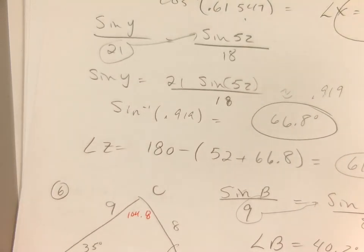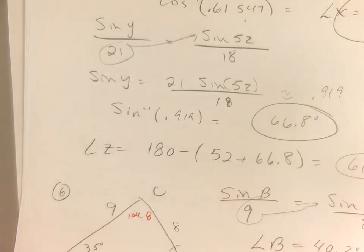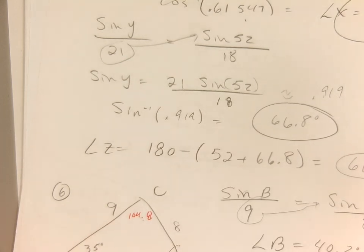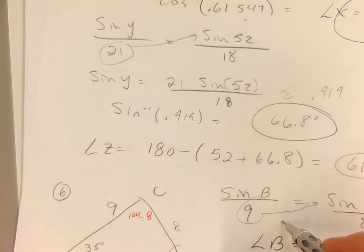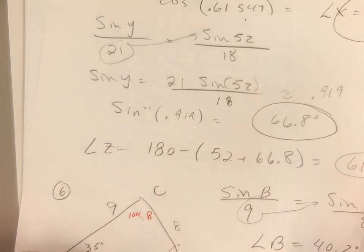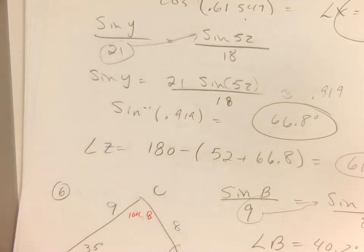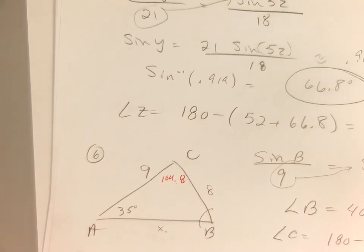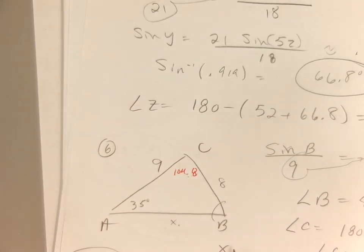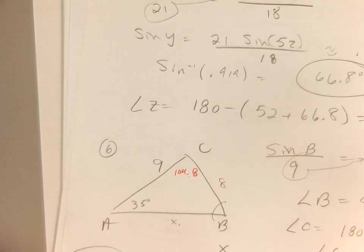Number six. To find the area I need this angle here. So I set up sine of b over 9 equals sine of 35 over 8. Using my calculator and taking sine inverse, I got angle b to be about 40 degrees. I then subtracted from 180. I also found side x using opposites: x over sine of 104 equals 8 over sine of 35. I multiplied and got 13.5.